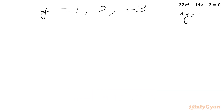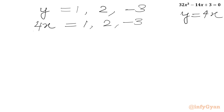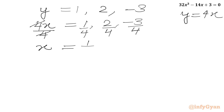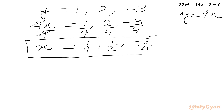Since y = 4x, we write 4x = 1, 2, and -3. Dividing both sides by 4, we get x = 1/4, x = 1/2, and x = -3/4.